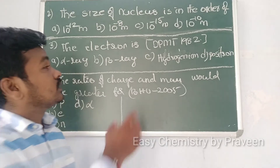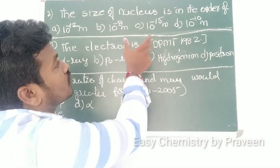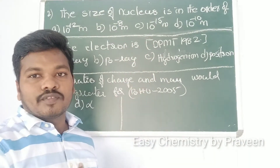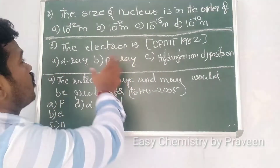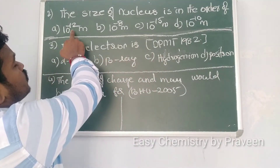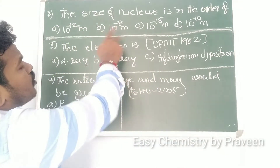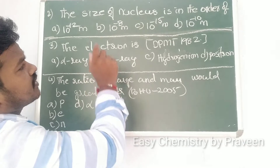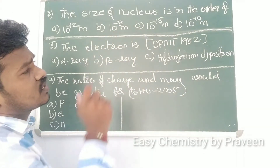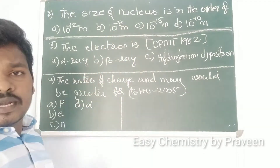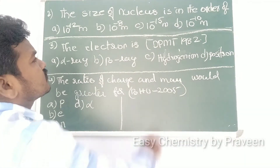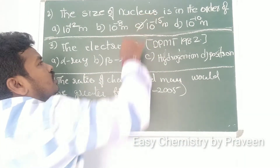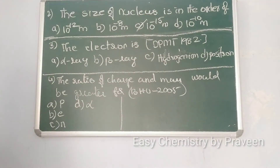The next question: the size of the nucleus is in the order of — options given are 10^-12 meters, 10^-8 meters, 10^-15 meters, and 10^10 meters. We know that the size of the nucleus is 10^-15 meters.